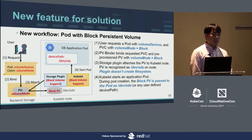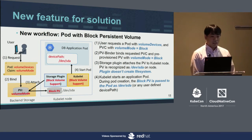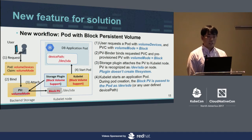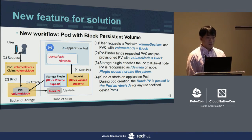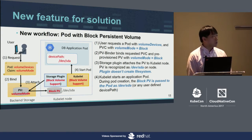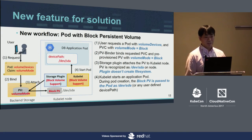This slide shows the new workflow using a block persistent volume. There are four steps. At step one, the user requests a pod with the `volumeDevices` parameter and a PVC with `volumeMode: Block`. At step two, the PV binder binds the requested PVC and a persistent volume that has `volumeMode: Block`. The important thing is that both the PVC's and PV's `volumeMode` must have the same value in order to bind.